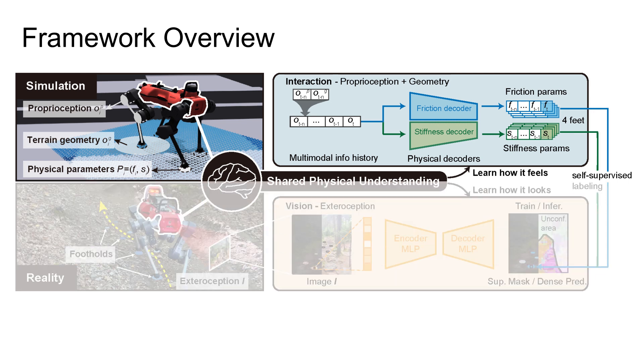The first part of the framework is the physical decoders, which are neural networks that take as input the proprioceptive and exteroceptive information and predict terrain stiffness and friction per foot. We train this module entirely in simulation.